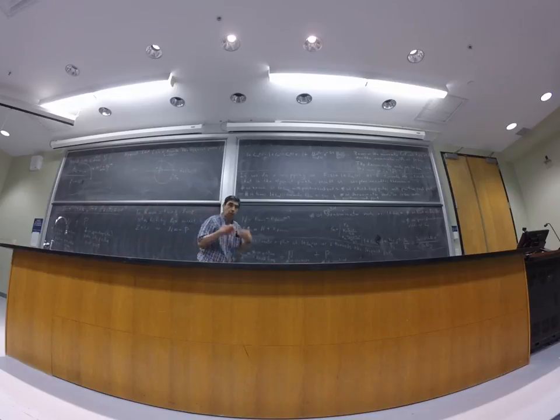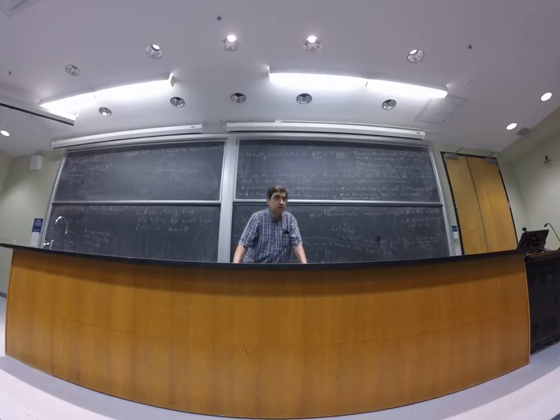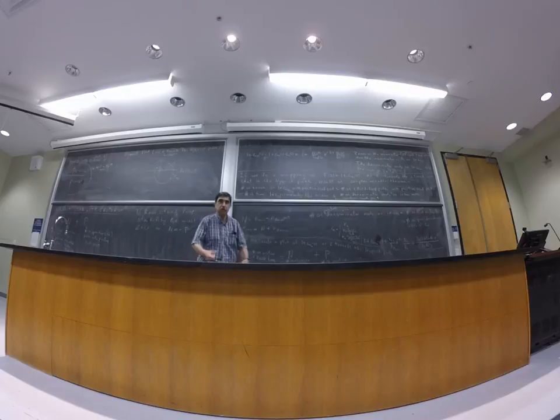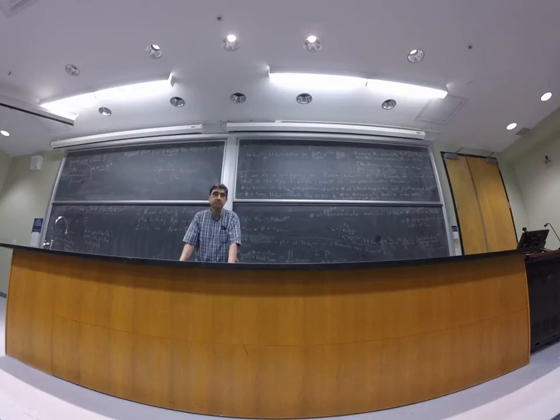If the system is open loop stable, what is P? Zero. So then N must be zero. So if I have an open loop stable system, for the closed loop system to also be stable, N must be zero. But the N must be zero only works for open loop stable system.